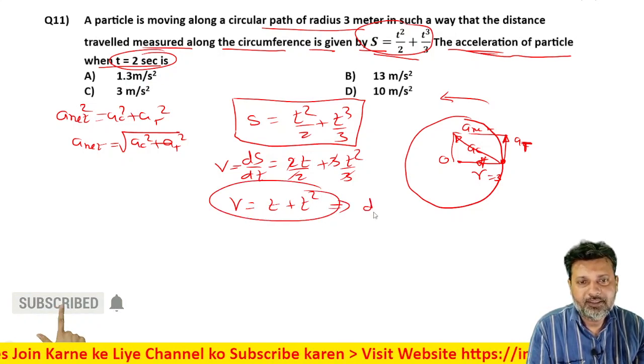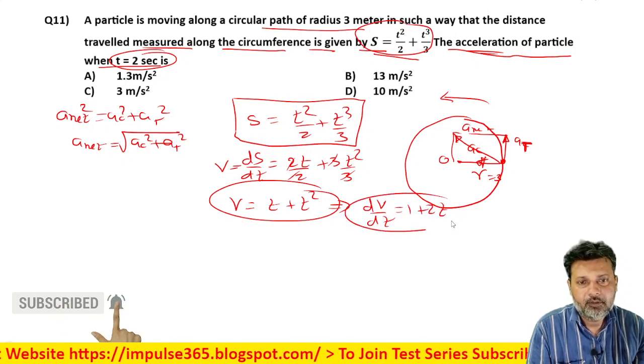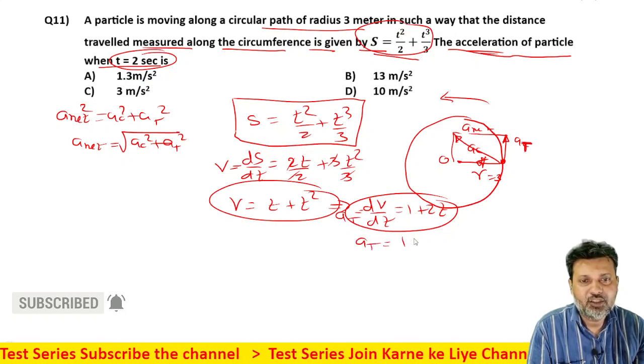If we differentiate this again with respect to time, what will come? One plus 2t will come. What will this become? Acceleration. And this is tangential acceleration. So the value of tangential acceleration is one plus 2t.